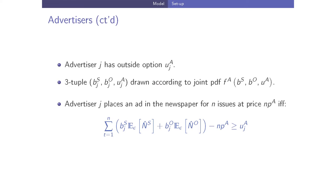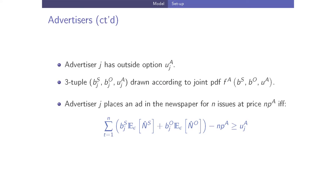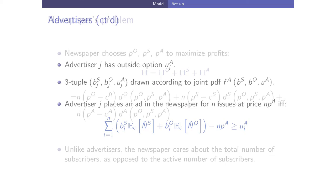Advertiser j has outside option u_j and will place an ad in the newspaper only if its gross payoff exceeds the outside option. The introduction of TV advertisement empirically represents a shock on the outside option of the advertiser. This is essentially the setup of the model.